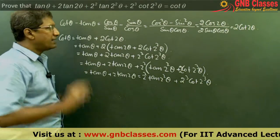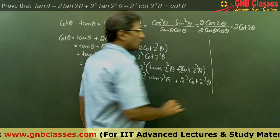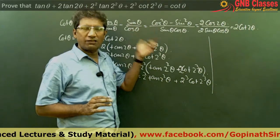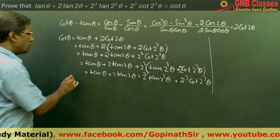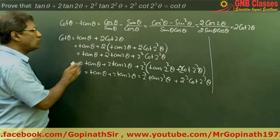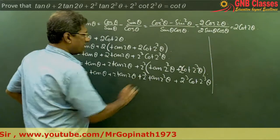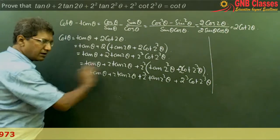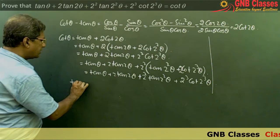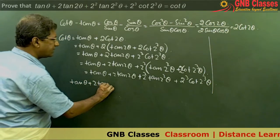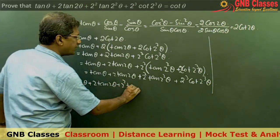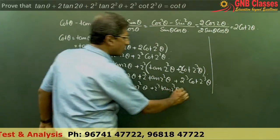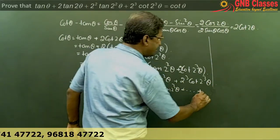For MCQ, please remember this result as a formula, because a lot of questions can come where you can directly replace the expression with cot θ. Generalizing it: tan θ plus 2 tan 2θ plus 2² tan 2²θ plus 2³ tan 2³θ, and this goes on.